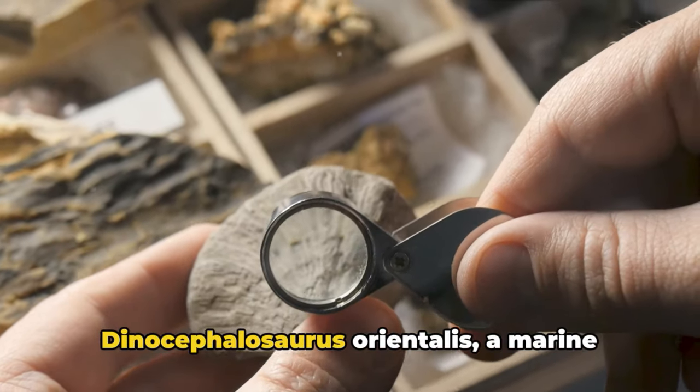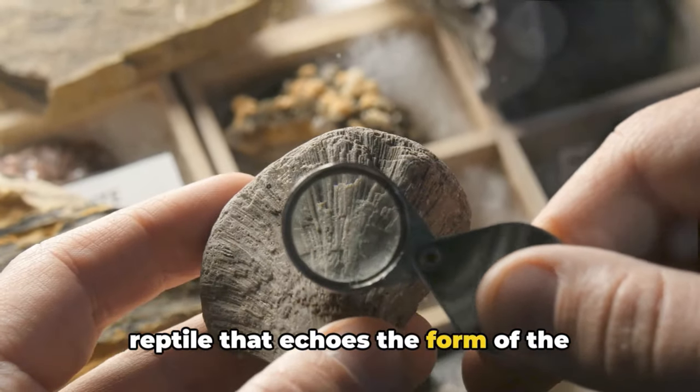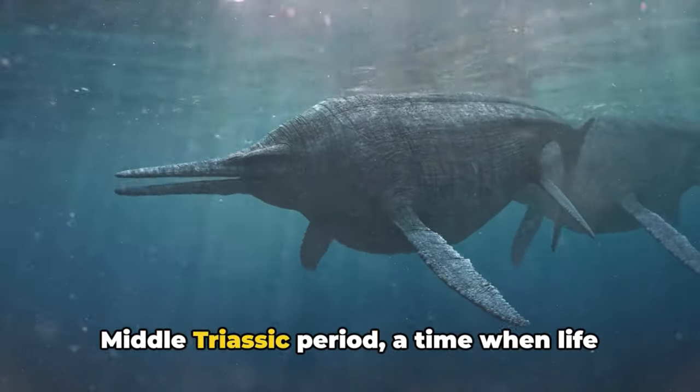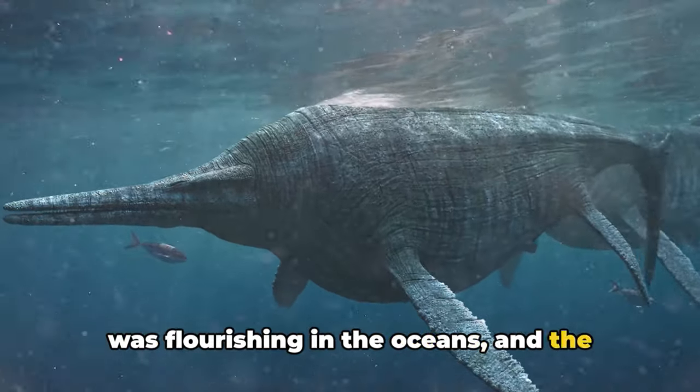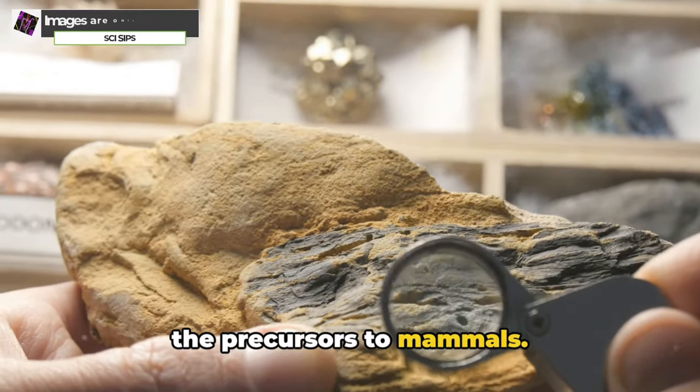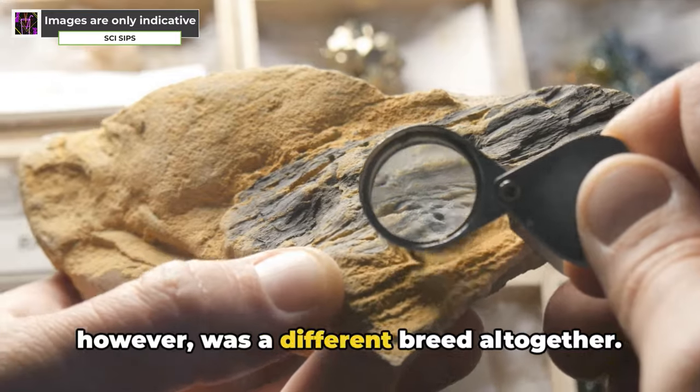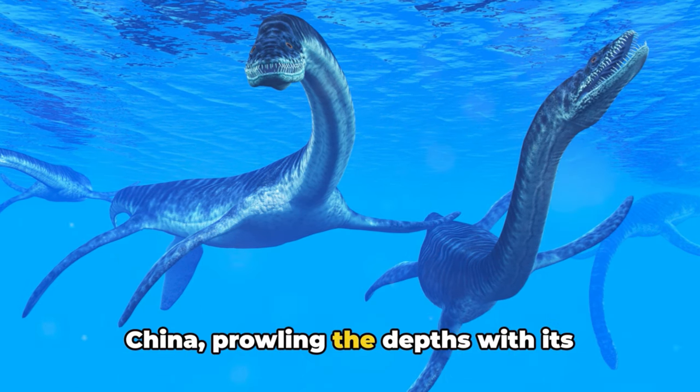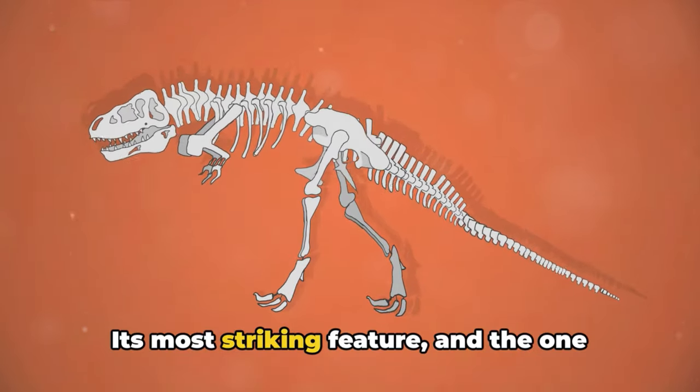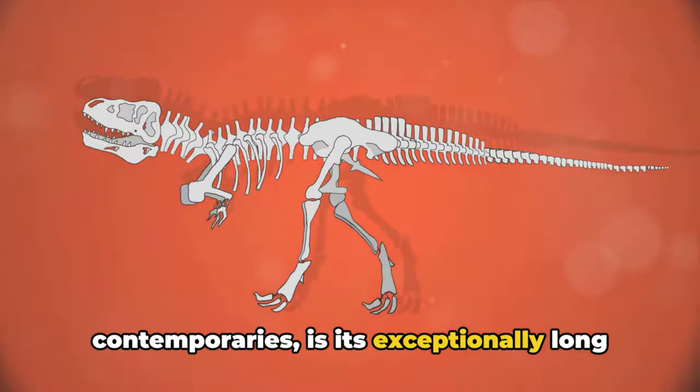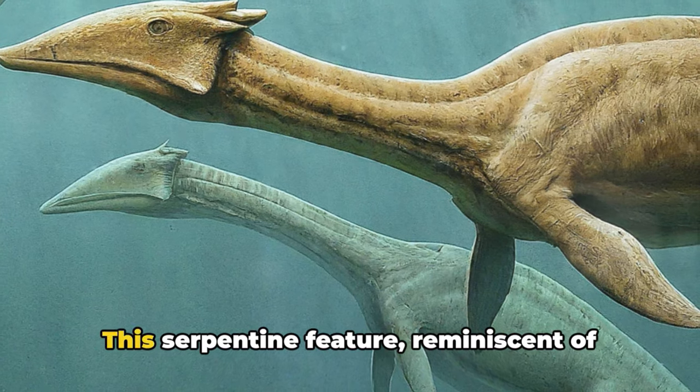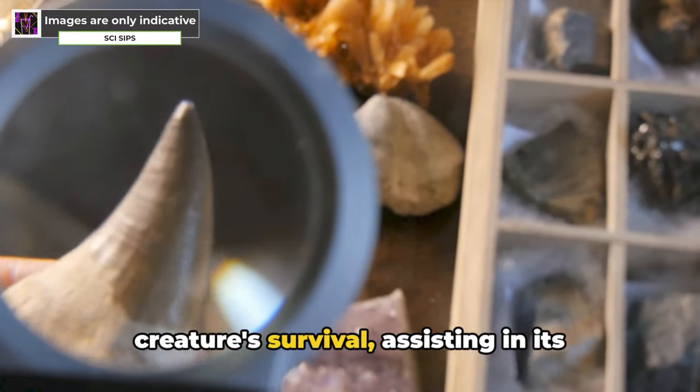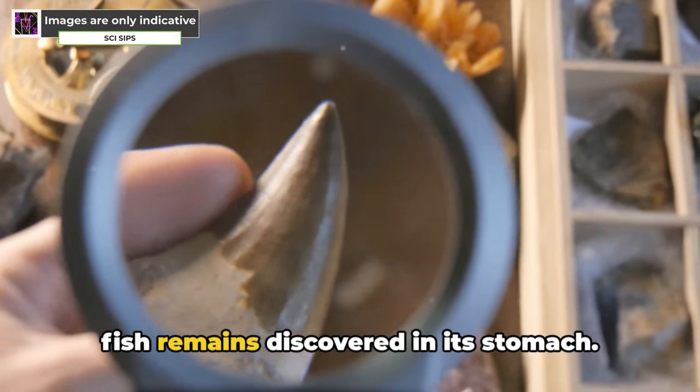Welcome to the captivating world of the Dinocephalosaurus orientalis, a marine reptile that echoes the form of the mythical Chinese dragon, yet is firmly rooted in the annals of our planet's history. This unique creature hails from the Middle Triassic period, a time when life was flourishing in the oceans and the land was dominated by early dinosaurs and the precursors to mammals. The Dinocephalosaurus orientalis, however, was a different breed altogether. A marine reptile, its stomping grounds were the ancient seas of what is now China, prowling the depths with its formidable six-meter length. Its most striking feature, and the one that sets it apart from its contemporaries, is its exceptionally long neck, adorned with 32 vertebrae. This serpentine feature, reminiscent of the Tanystropheus hydroides, wasn't merely for show. It played a crucial role in the creature's survival, assisting in its fishing endeavors, as evidenced by the fish remains discovered in its stomach.